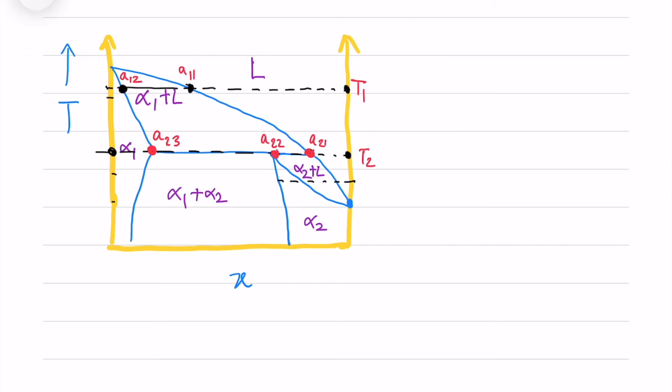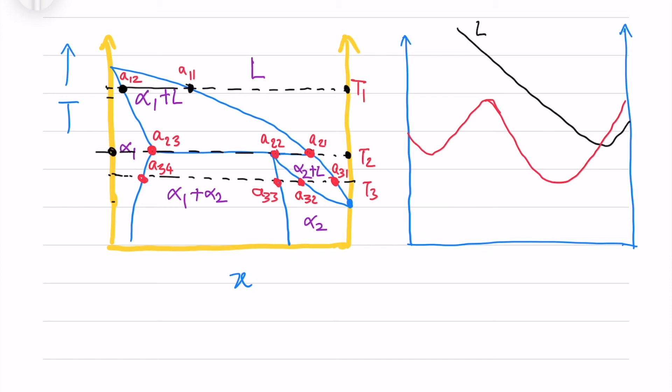You see alpha 1, alpha 2, and liquid are in equilibrium between A23 and A21. Now at temperature T3, I have five points: A31, A32, A33, and A34. For this, the liquid goes up like this, and for the alpha curve, you see a more downward curve so that you can take two common tangents between the curves.